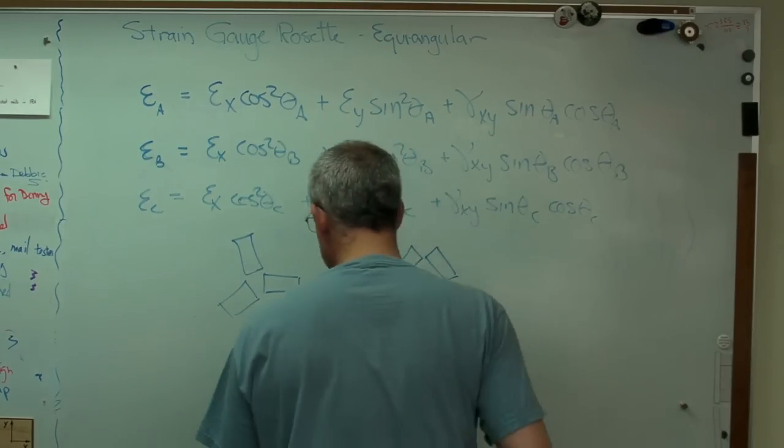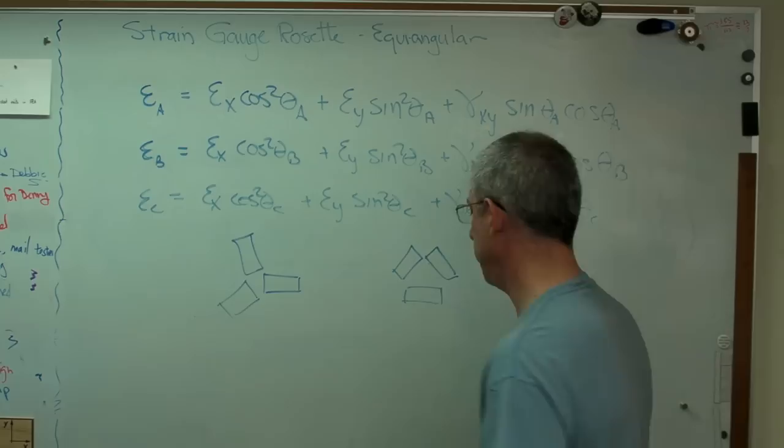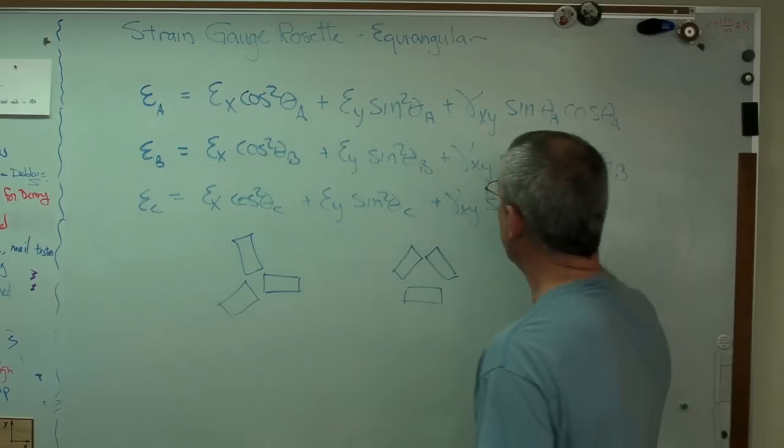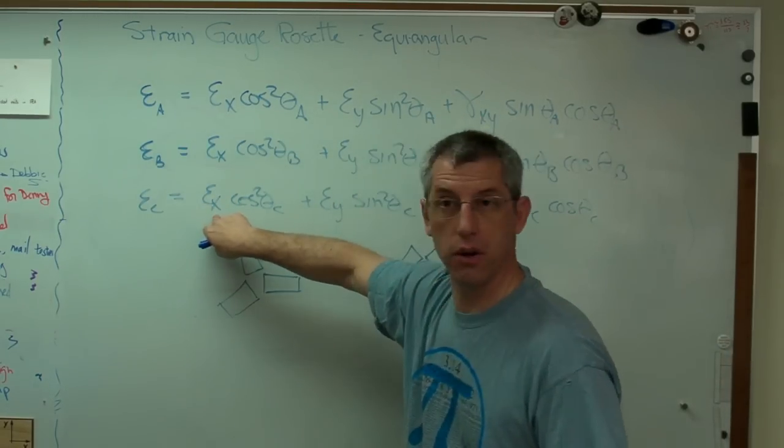So pick this however you want. We can rotate this. It doesn't really matter because you can put in whatever angles you want. So we've got this. We've got three equations, three unknowns. We know that we're going to measure those, calculate those. We're set.